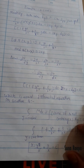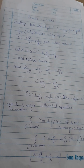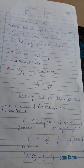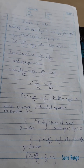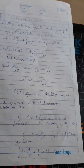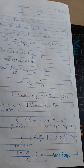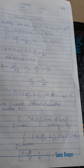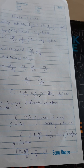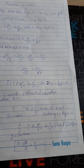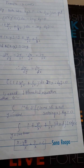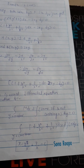For the exact equation, we compute ∫M dx (treating y as constant) plus the integral of terms in N not containing x, set equal to a constant. Integrating 1 + y²/x² + 3/x² with respect to x gives x - y²/x - 3/x = C. This is the solution.